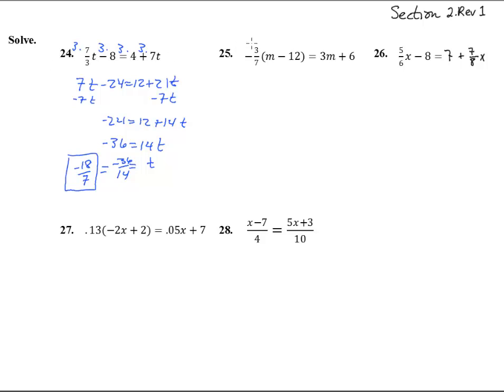Number 25, we've got to get rid of those parentheses first, so let's jump to parentheses in. So we had negative 3/7 m plus 36/7 equals 3m plus 6. Now we can get rid of those pesky fractions. Multiply, we have 7's and 1's over here, so 7 is the least common denominator, times everything by 7.